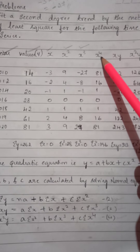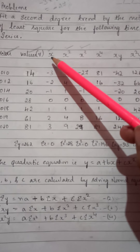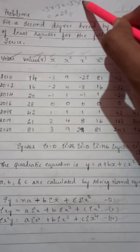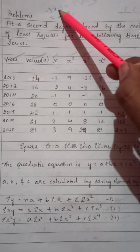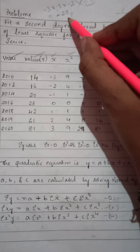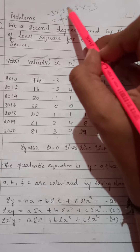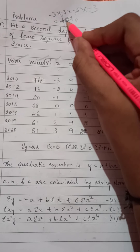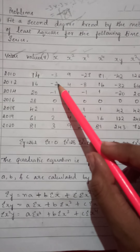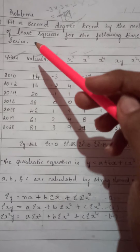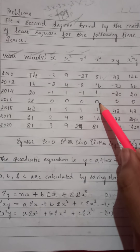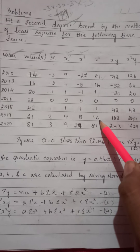The next column is x⁴ — multiply x four times. For −3 × −3 × −3 × −3: minus × minus = plus, plus × minus = minus, minus × minus = plus, so the result is positive. 3 × 3 = 9, 9 × 3 = 27, 27 × 3 = 81. So x⁴ for −3 is 81. Similarly: −2⁴ = 16; −1⁴ = 1; 0⁴ = 0; 1⁴ = 1; 2⁴ = 16; 3⁴ = 81.